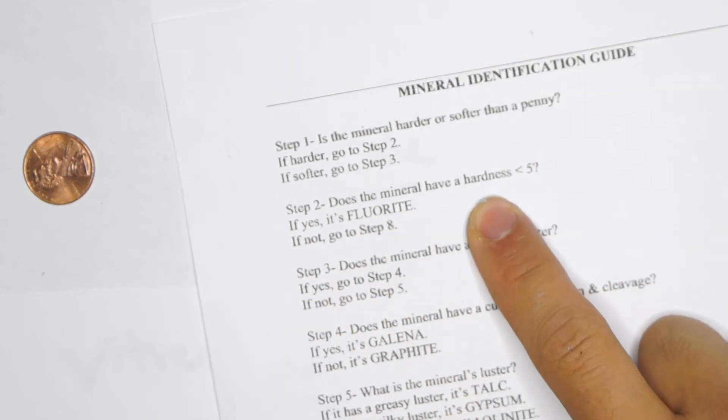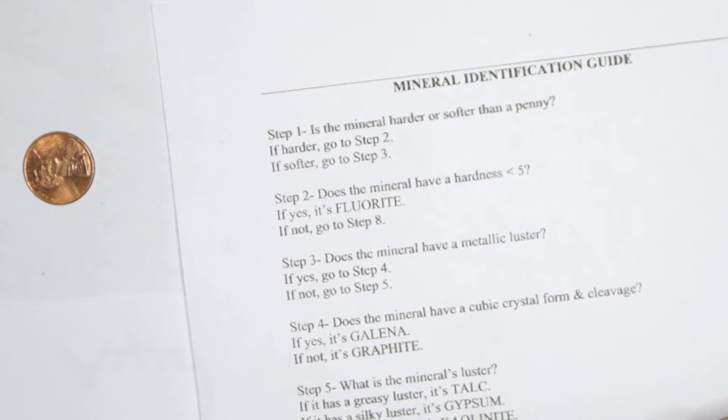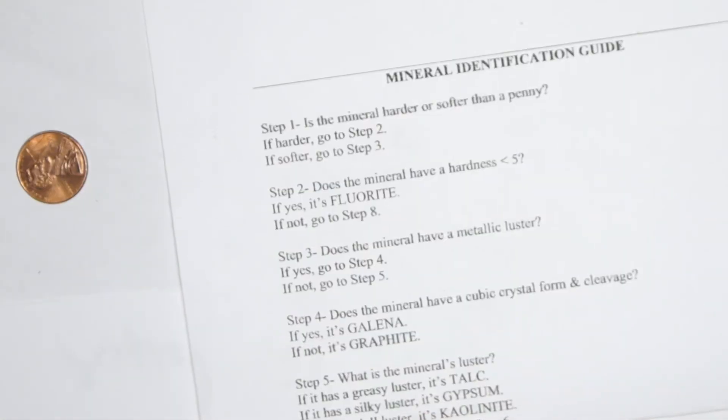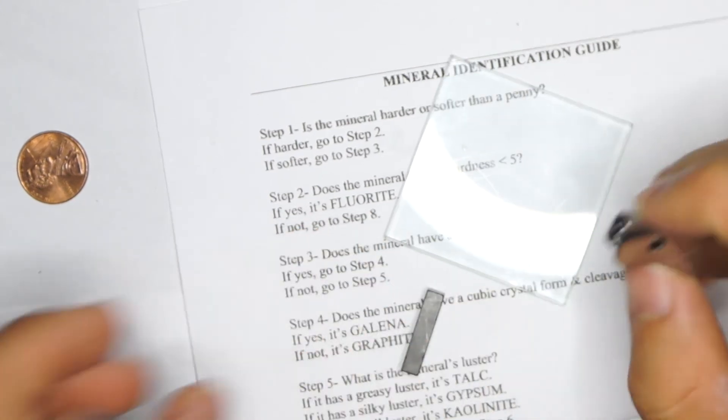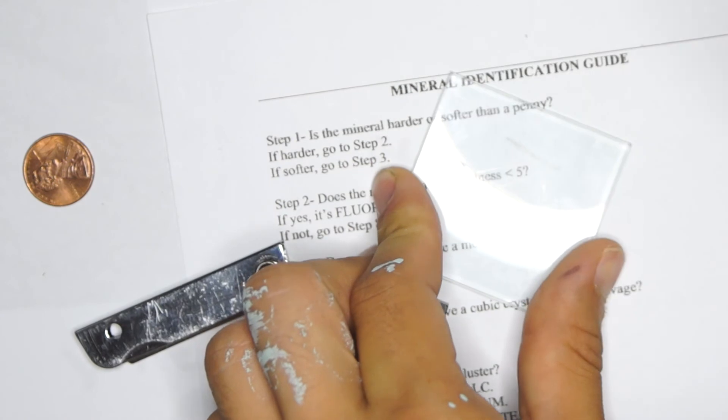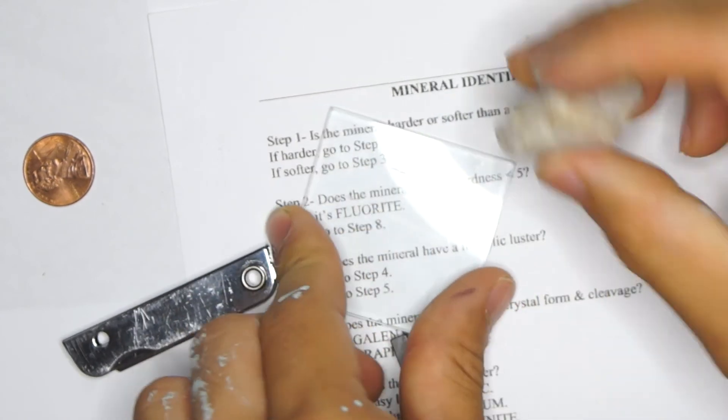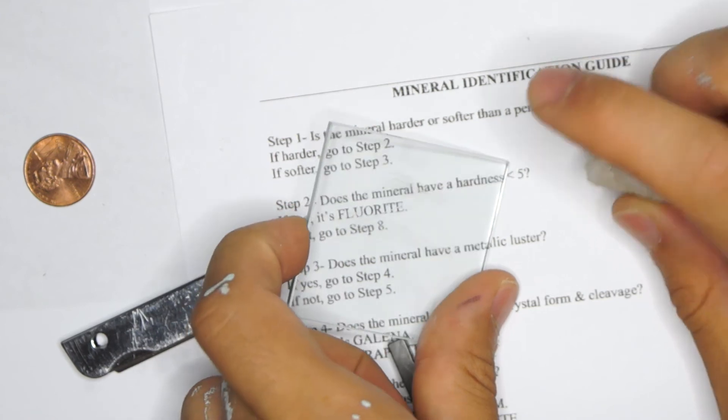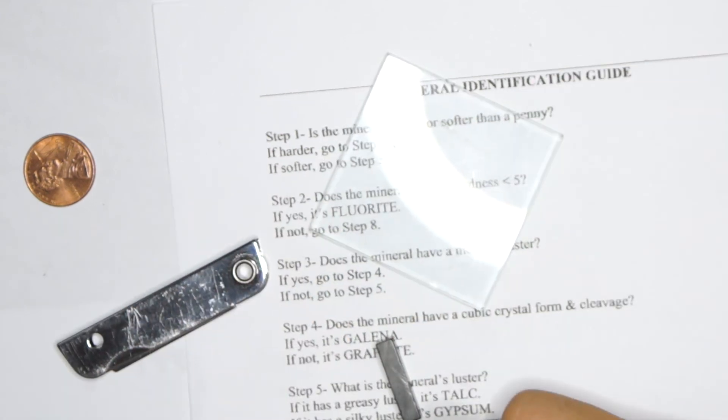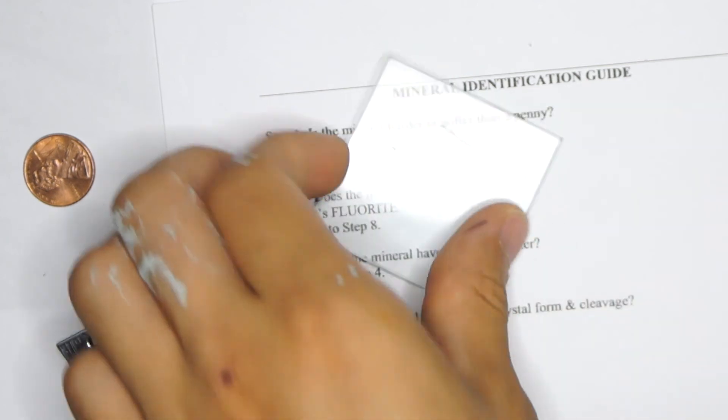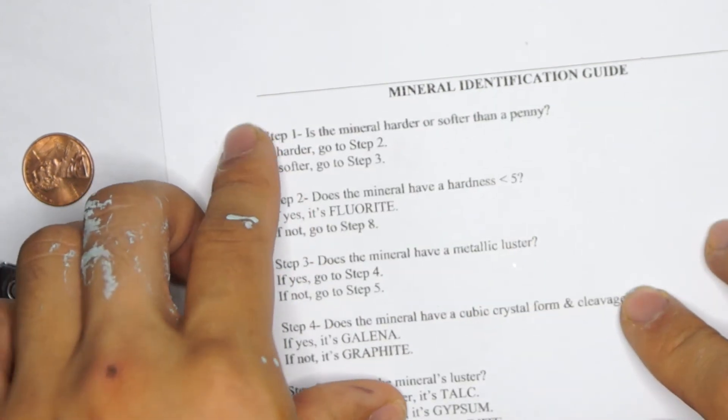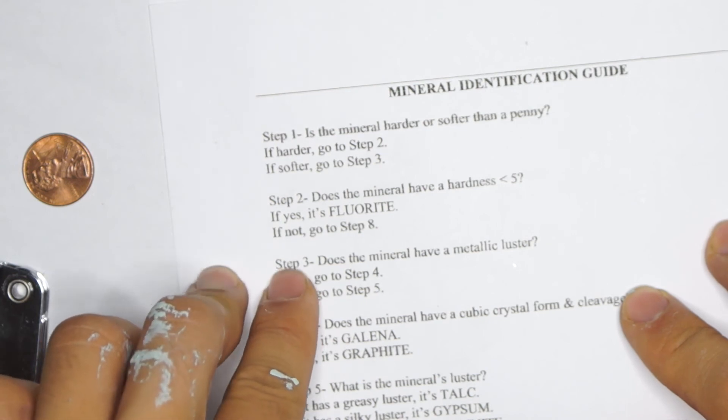Does the mineral have a hardness less than five? If you remember, hardness of five means glass. So we're going to test it with some glass. Pulling out that glass plate. Now we're going to try scratching it. Yep, definitely scratches the glass. Now remember, don't smash the glass. Almost anything can smash glass, but not everything can scratch the glass like you're figuring out. So harder than the glass. So we're going on to step eight.